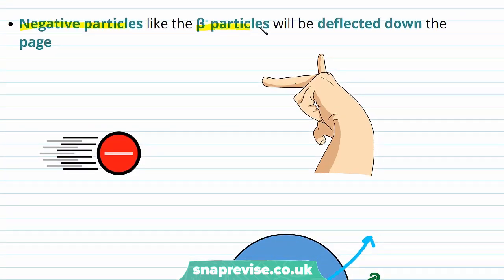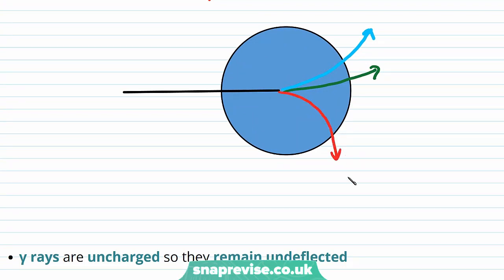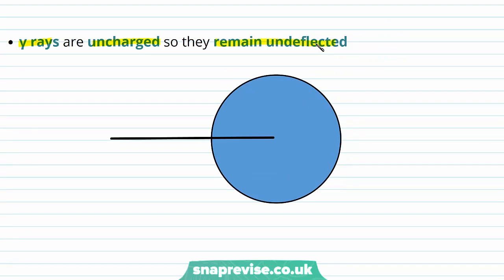On the other hand, negative particles like the beta minus particles will be deflected down the page. If the negative charge is originally moving from left to right, we use Fleming's left-hand rule and point our second finger from right to left to represent the negative charge. The magnetic field is into the page and the force points downwards, so the beta minus particle is deflected downwards — in the opposite direction to the positively charged alpha and beta plus particles. Finally, gamma rays are uncharged, so they remain undeflected and carry on moving in a straight line.